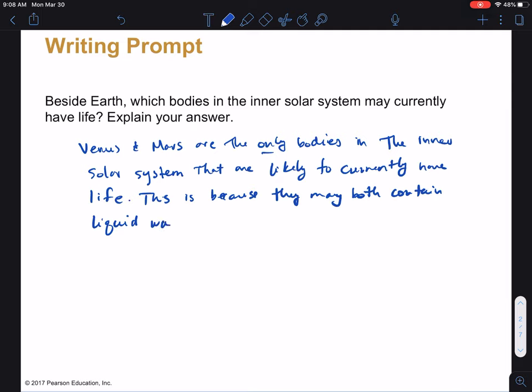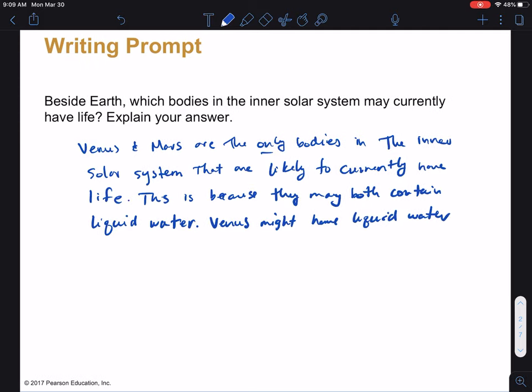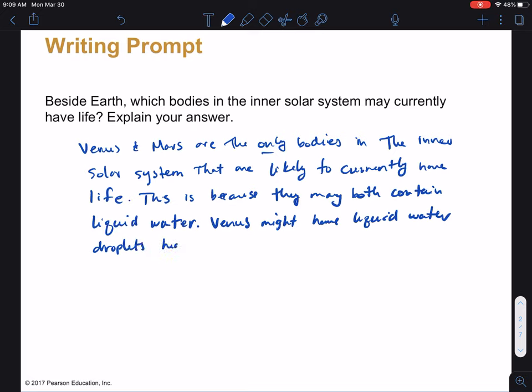This is because they may both contain liquid water. Remember, we talked about how important it is for life to have liquid water for a variety of reasons. Now we think in the case of Venus that water may be high in the atmosphere as little droplets. So Venus might have liquid water droplets high in the atmosphere.